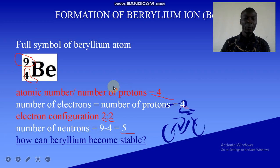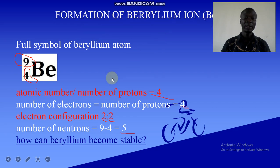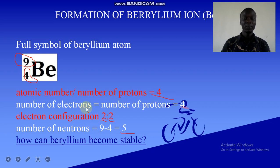Welcome to this lesson. We are continuing to look at how ions are formed, specifically how cations are formed. In the previous video we looked at how the beryllium ion is formed. There are four protons in a beryllium atom because the atomic number is four, and since there are four protons there are also four electrons because it is a neutral atom. The electronic configuration is 2,2.